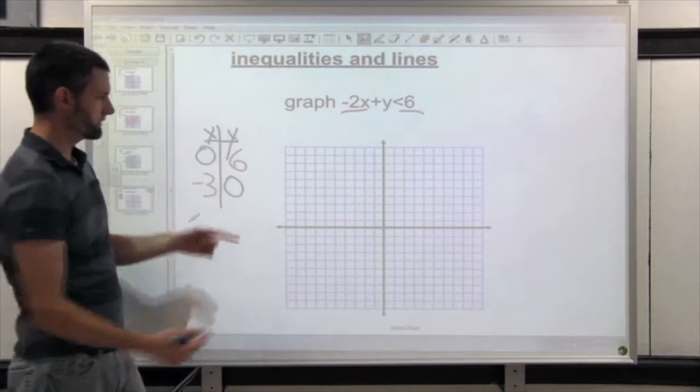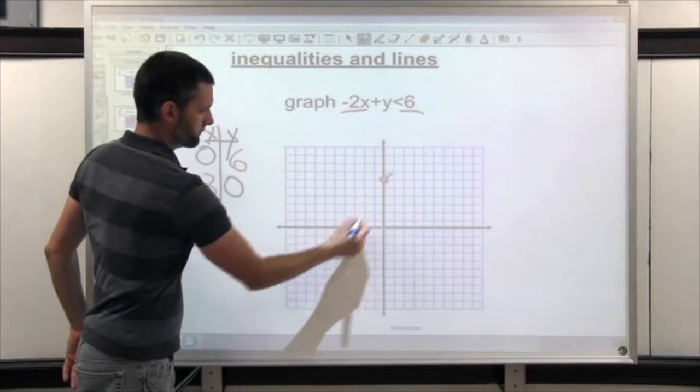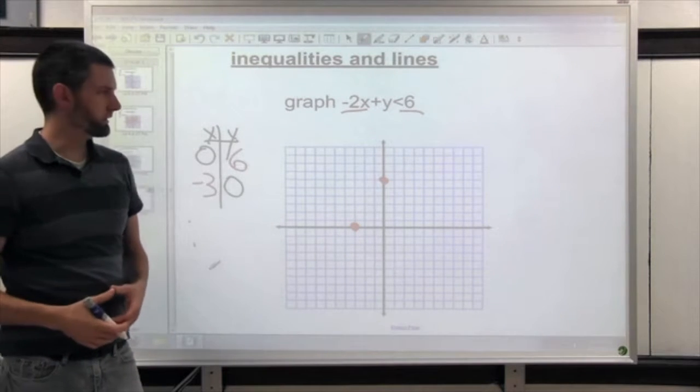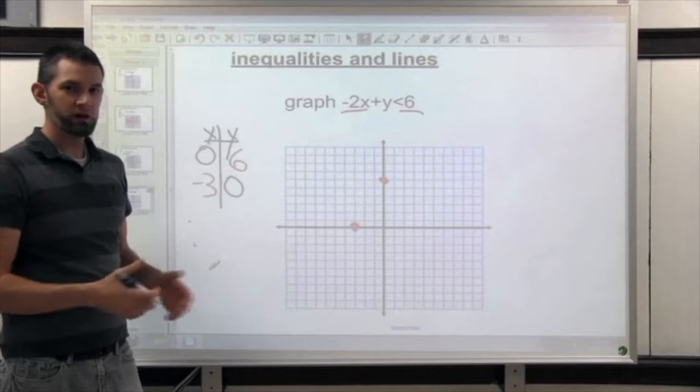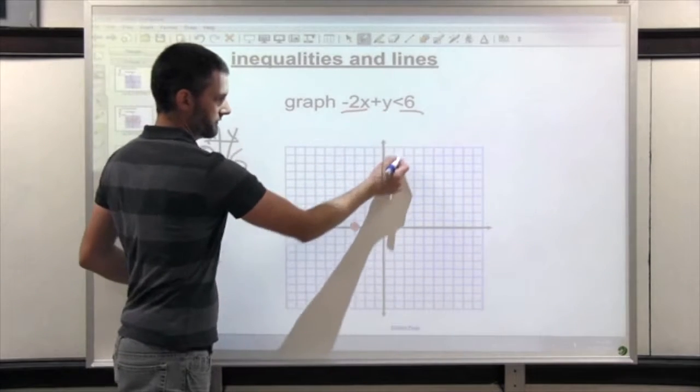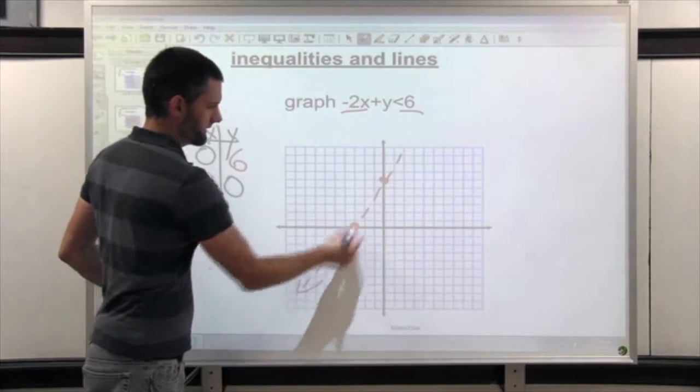So we pretend it's an equation. We graph those two points. And the first thing we need to do at this point is decide what type of line it is. Solid or dashed? Right. It's less than, so it's a dashed line.